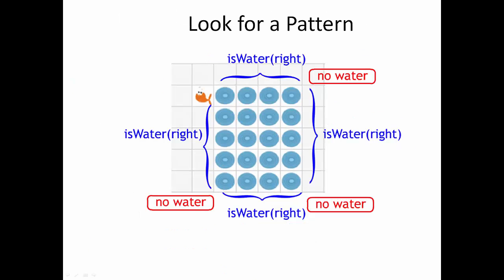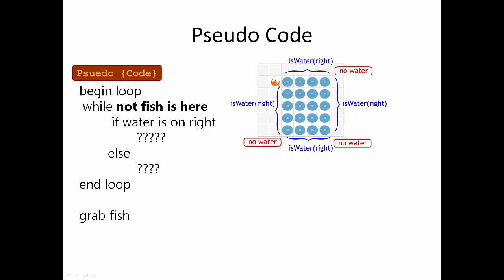Looking for patterns in our task, we see that while Pam is next to the water, we could use is water right as a condition for an if statement, and that when Pam gets to the corner, there will be no water. So our first if statement is if water's on the right, then Pam will waddle. Else, Pam will turn right.